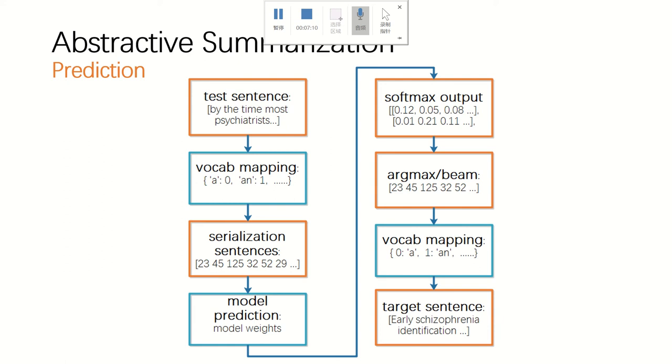So our goal is to get the most likely summary. So we need to decode it by argmax or beam search and map the number to a word. And finally we can get our predicted summary.